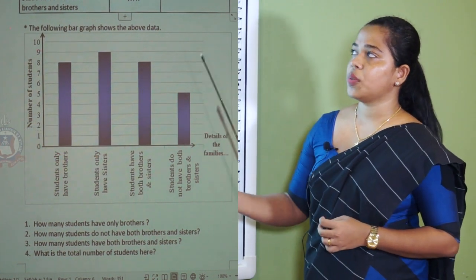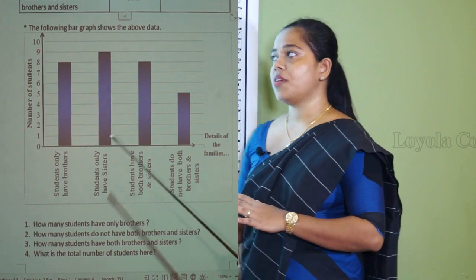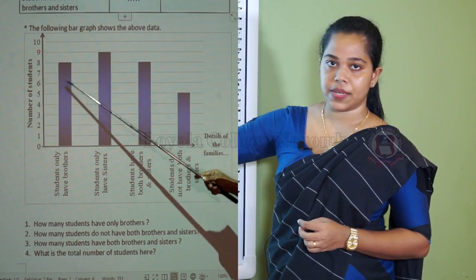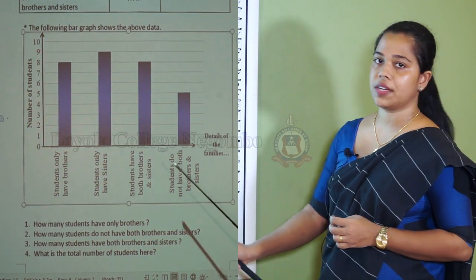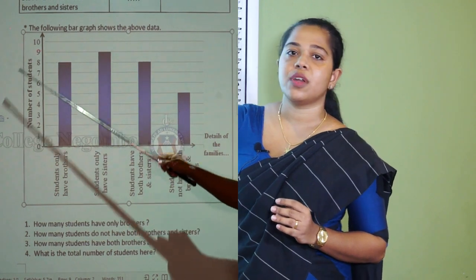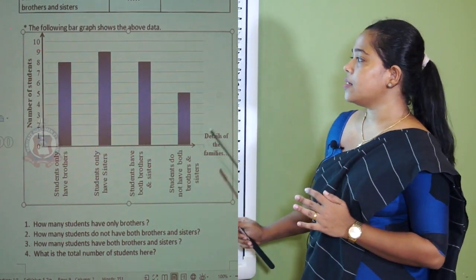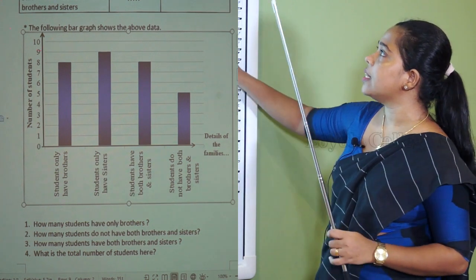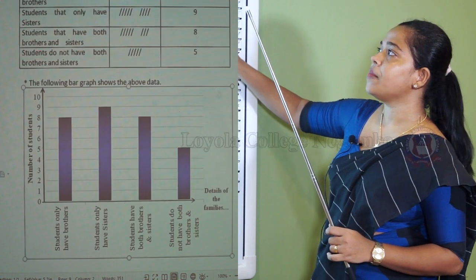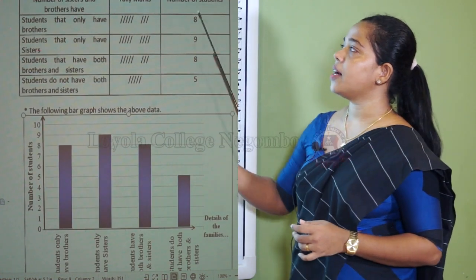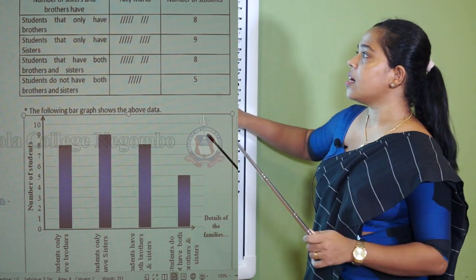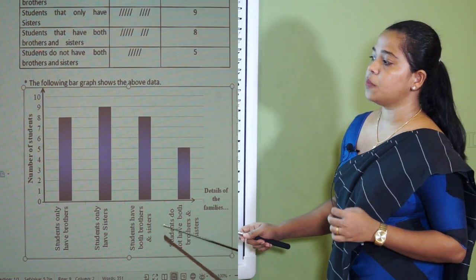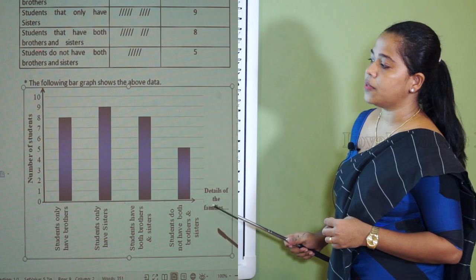The following bar graph shows the above data. When drawing a graph there are 2 axes: the vertical axis and the horizontal axis. In the vertical axis we show the numbers, and in the horizontal axis we show the categories. I have named the vertical axis as the number of students and the horizontal axis as details of the families. I have named all 4 categories: students only have brothers, students only have sisters, students have both brothers and sisters, and students do not have both brothers and sisters.